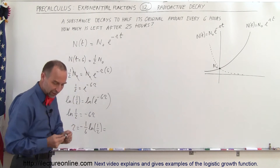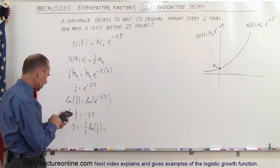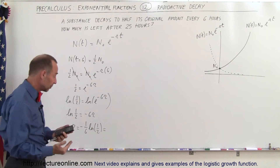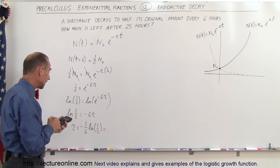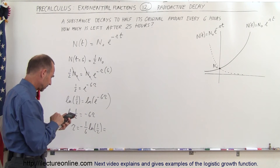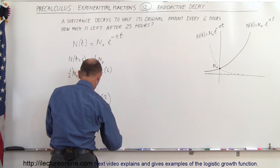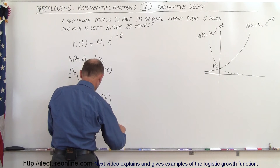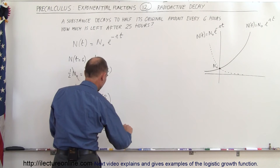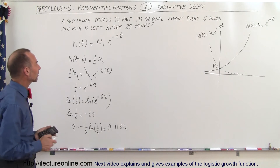Let's calculate that value. We take the natural log of 0.5, which is a negative number, then multiply by negative one sixth so the negative disappears, and we get r equals approximately 0.115525. Keep a few extra decimal places for a more accurate answer.